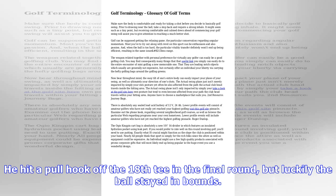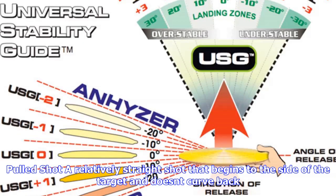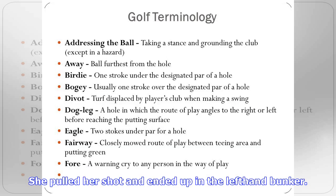Mulligan: the custom of hitting a second ball without penalty on a hole, usually the first tee. Mulligans are not allowed according to the rules of golf.